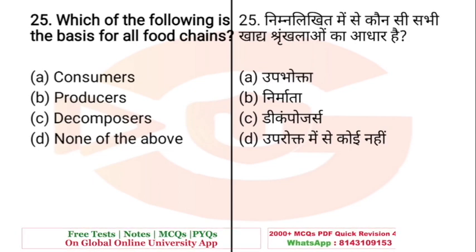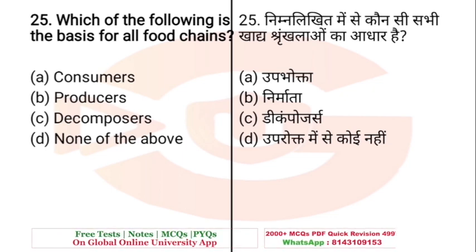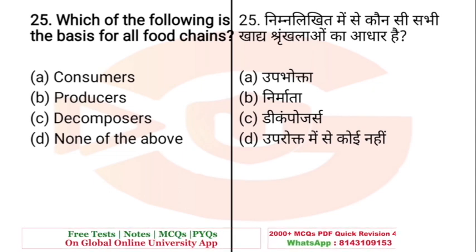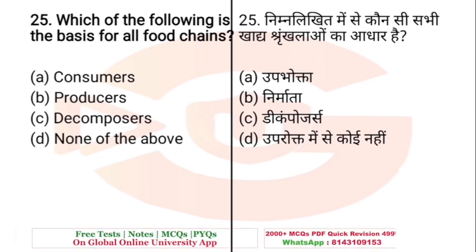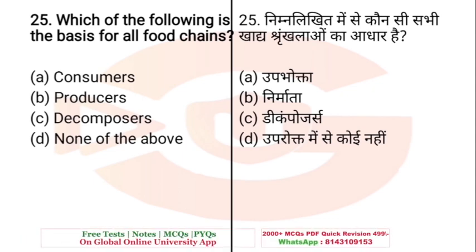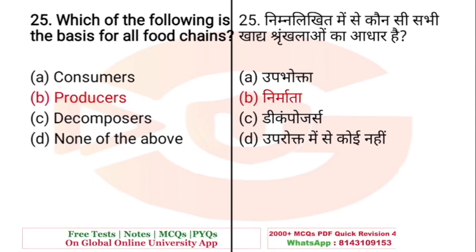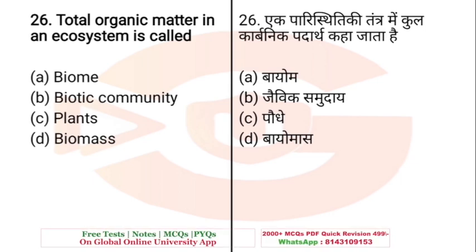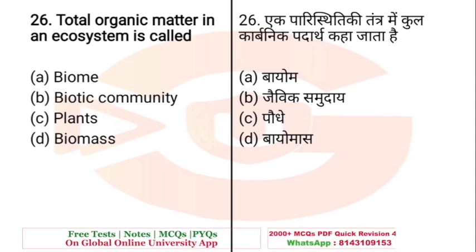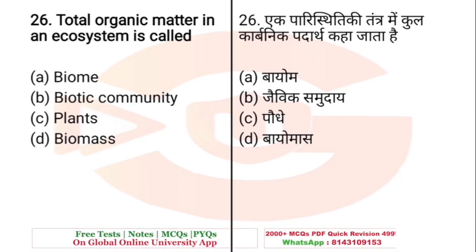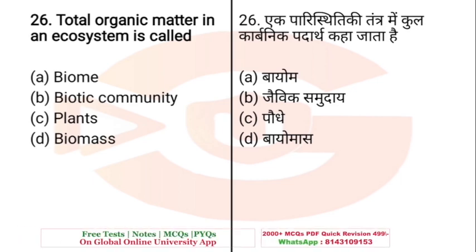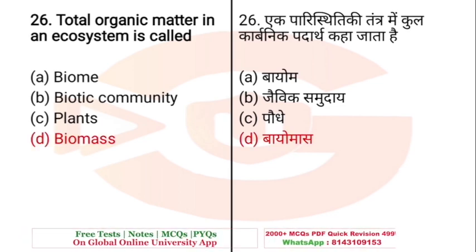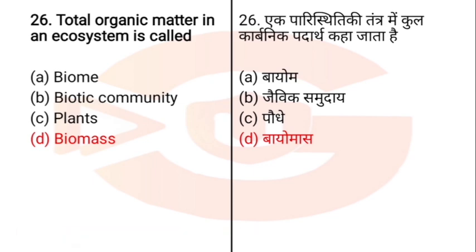Question: Which of the following is the basis for all food chains? A. Consumers, B. Producers, C. Decomposers, D. None of the above. The right answer is B — Producers. Also: Total organic matter in an ecosystem is called — Biome / Biotic community / Plants / Biomass. The right answer is Biomass.